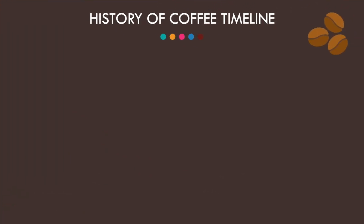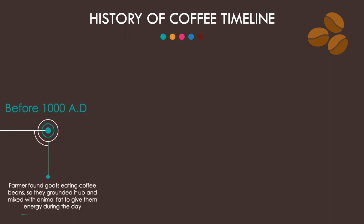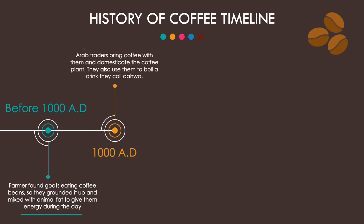The history of coffee timeline. Before 1000 AD, a farmer found goats eating coffee beans, so they ground it up and mixed it with animal fat to give them energy during the day. 1080 AD: Arab traders brought coffee with them and domesticated the coffee plant. They also used it to boil a drink they called koa.